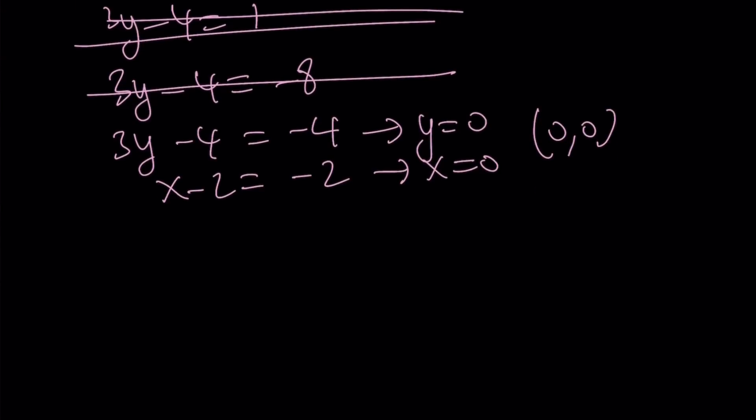The next case we're going to be looking at is 3y minus 4 is equal to negative 2. But in this case, if you add 4 to both sides, you get 3y equals 2. And that's definitely not going to give you an integer solution.